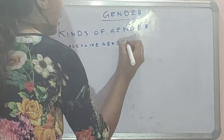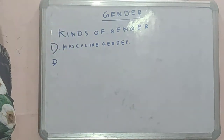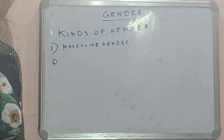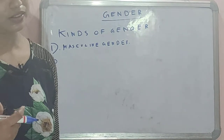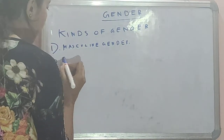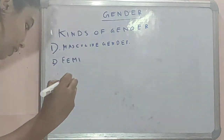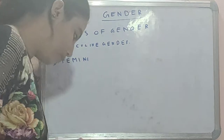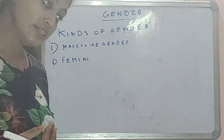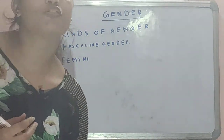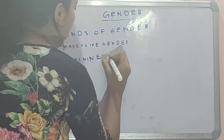Secondly, we are talking about feminine gender. A noun which denotes a female person or animal is known as feminine gender. For example: queen, sister, mother, nun, niece, aunt — these are examples of feminine gender.